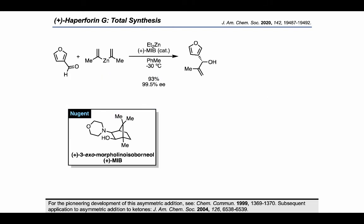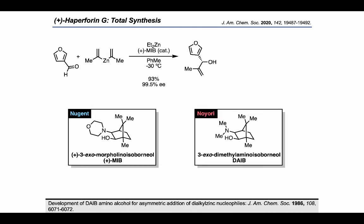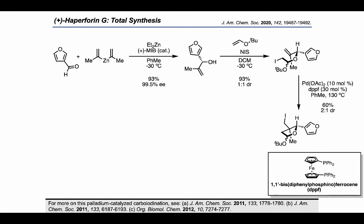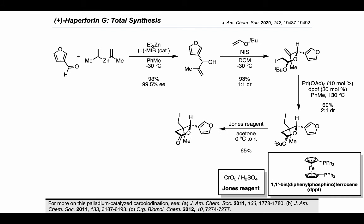To access this fragment, the authors carried out an asymmetric propenylation on 3-furancarboxaldehyde using diphenylzinc and catalytic MIB, which is a chiral amino alcohol developed by Nugent for this type of transformation, which in turn took inspiration from Noyori's chiral amino alcohol DAIB. Having formed the secondary alcohol in a highly enantioenriched fashion, the authors carried out an NIS-promoted acetal formation with tert-butyl vinyl ether. They then carried out a palladium-catalyzed carbiodinaton, which resulted in ring closure to give a product bearing a new all-carbon quaternary stereocenter. The acetal diastereomers could then be converged using Jones' reagent to oxidize up to the lactone.